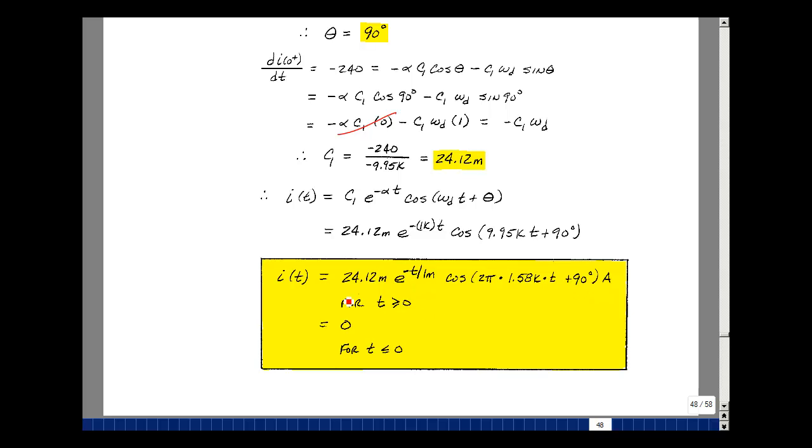At t equals 0, this is this number times e^0, which is 1, the cosine then of 0 plus 90 degrees, but the cosine of 90 is 0. So this is also 0 at t equals 0. We've seen previously when the switch is open, the current in the inductance was 0, so we have continuity at t equals 0.